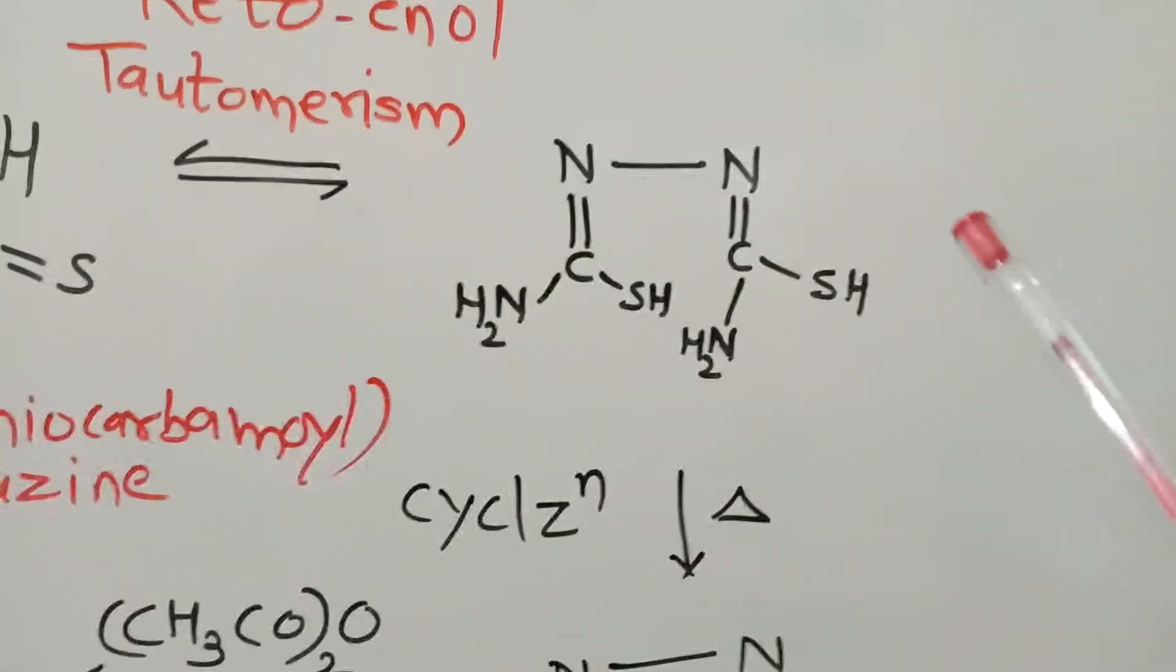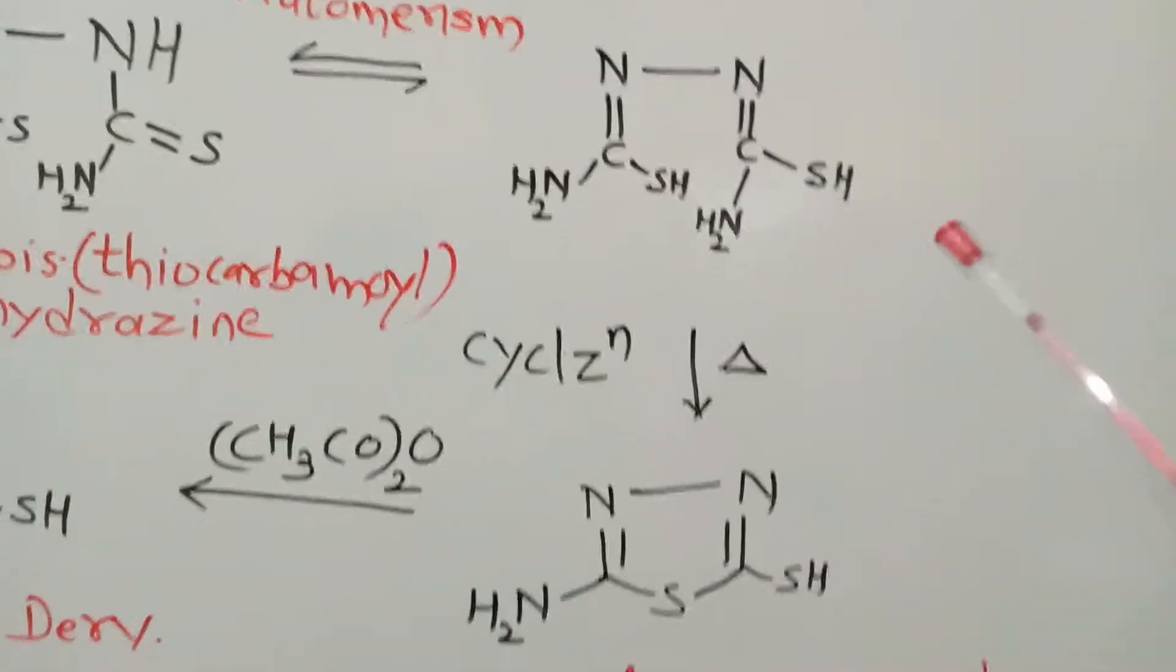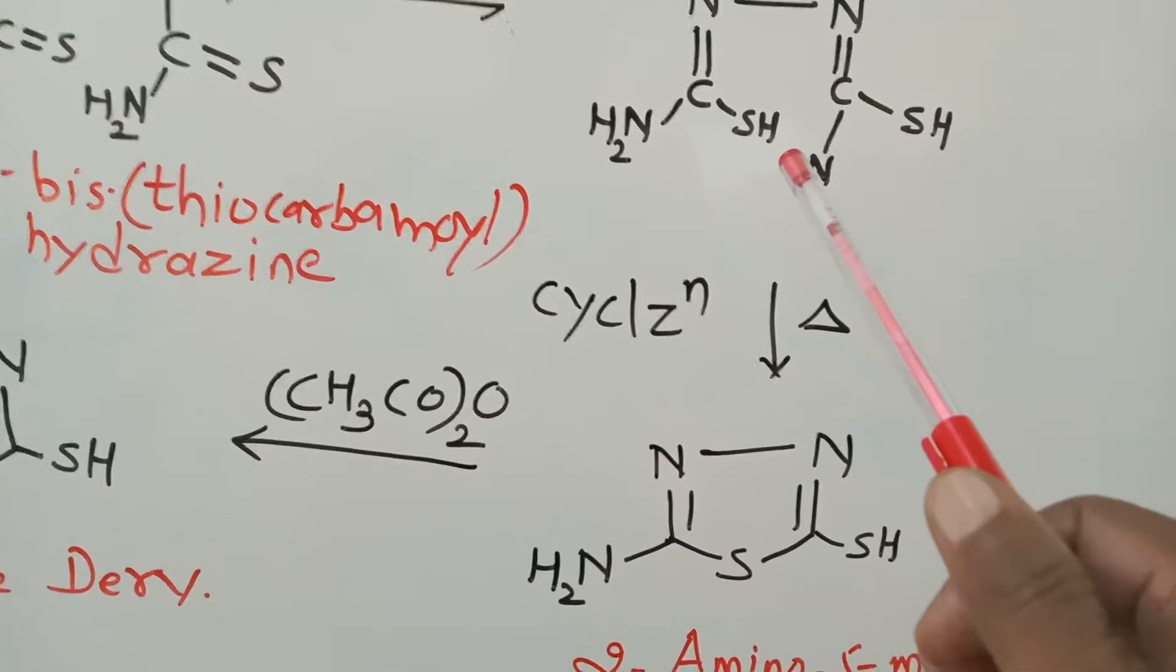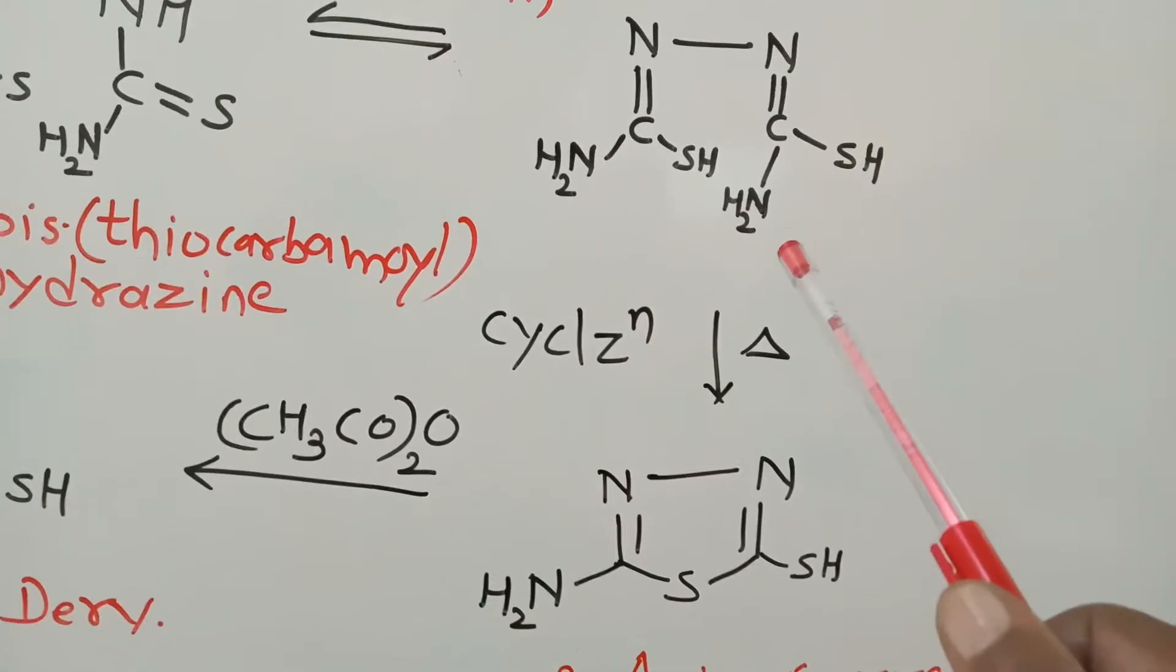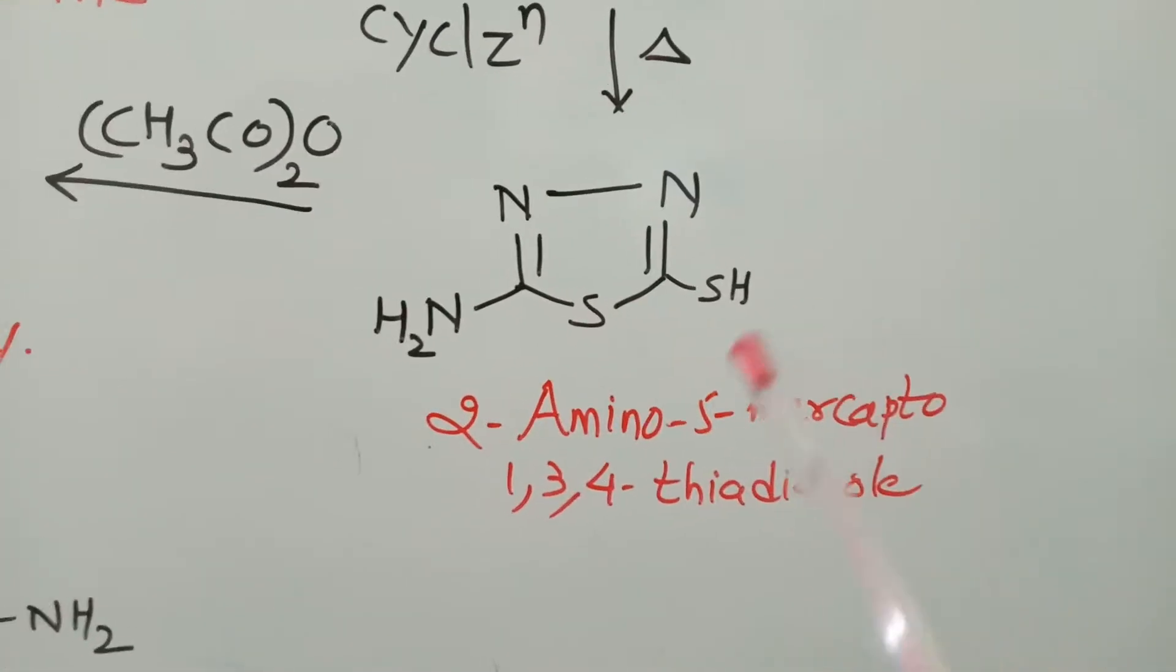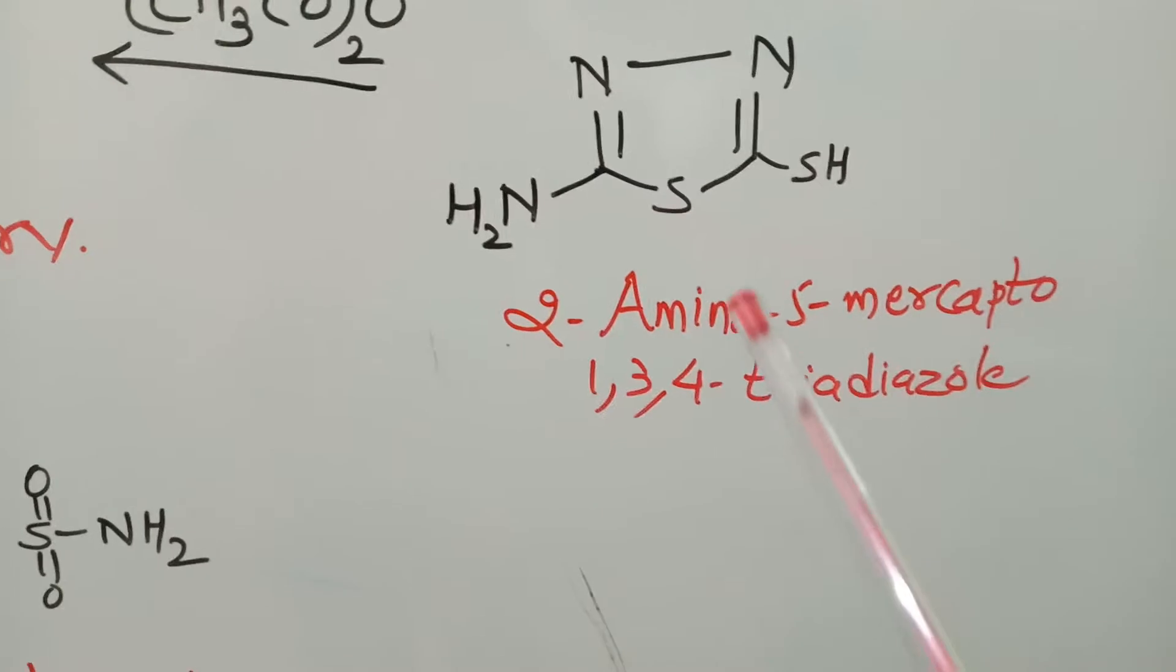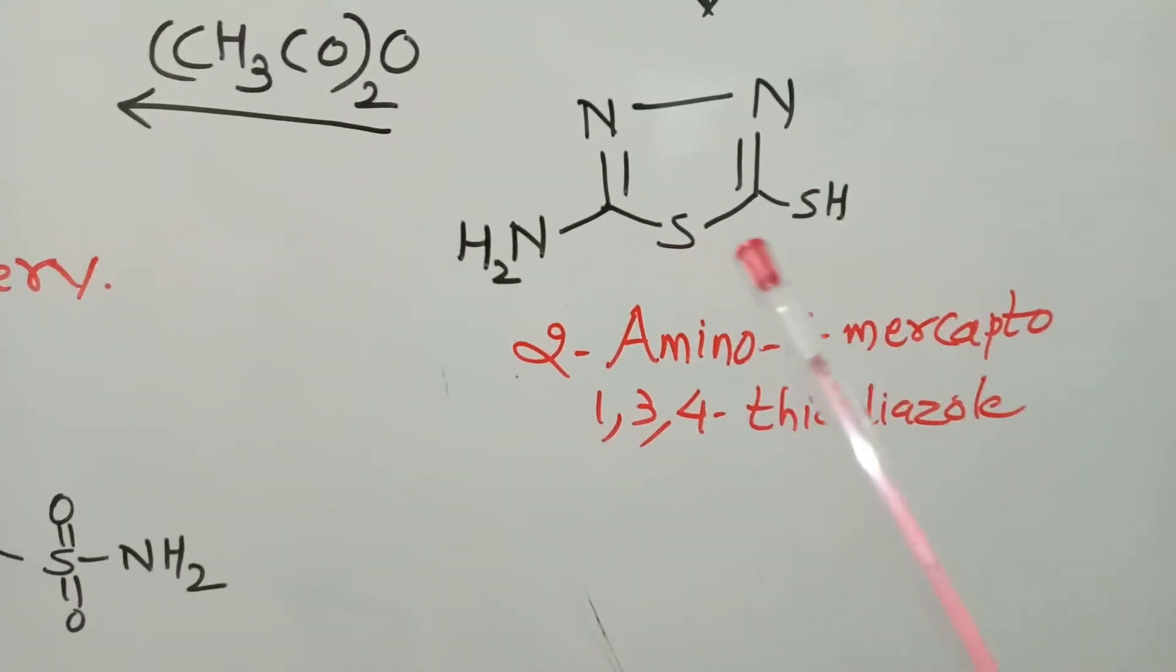This is the tautomeric structure which on heating undergoes cyclization. From here, you will find that the amino group and this SH group react to liberate ammonia molecule. Hence, the cyclization takes place to liberate two ammonia. This is 2-amino-5-mercapto-1,3,4-thiodiazole.